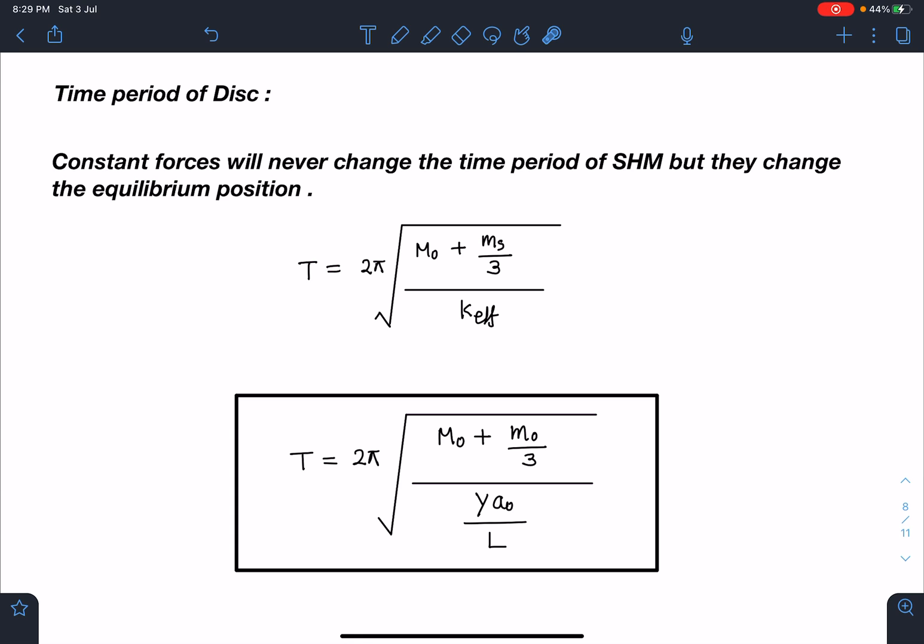Finally, the time period of the disc. You need to remember this concept: constant forces will never change the time period of SHM but they change the equilibrium position. So spring with mass, its time period is given by 2π√[(mass of the block + mass of the spring/3)/K_effective]. Those who are interested in the proof can check my courses. Finally, our answer is going to be T = 2π√[(m₀ + m₀/3)/(YA₀/L)].